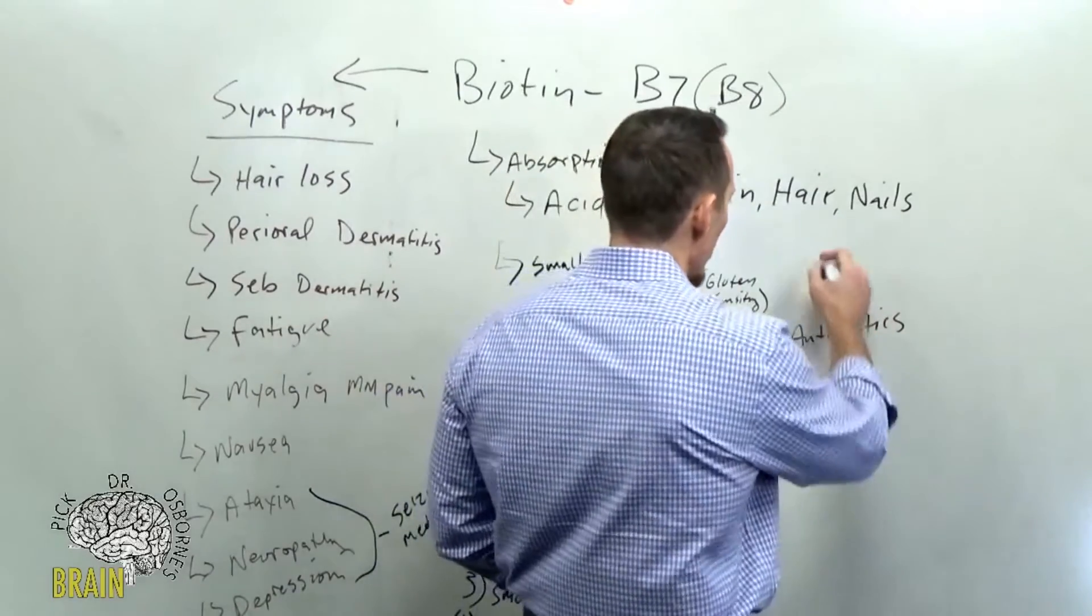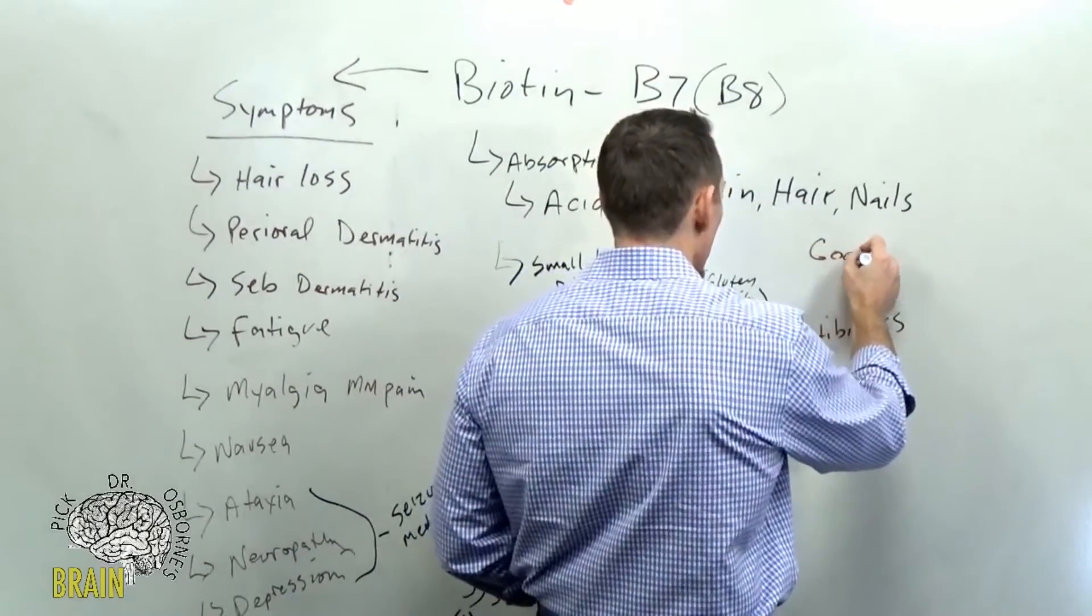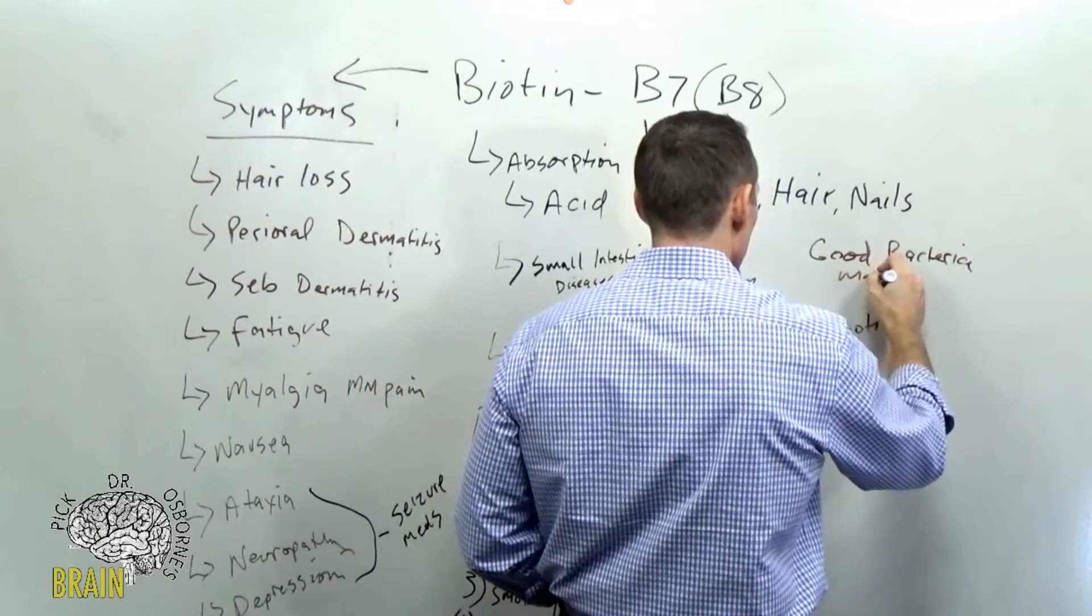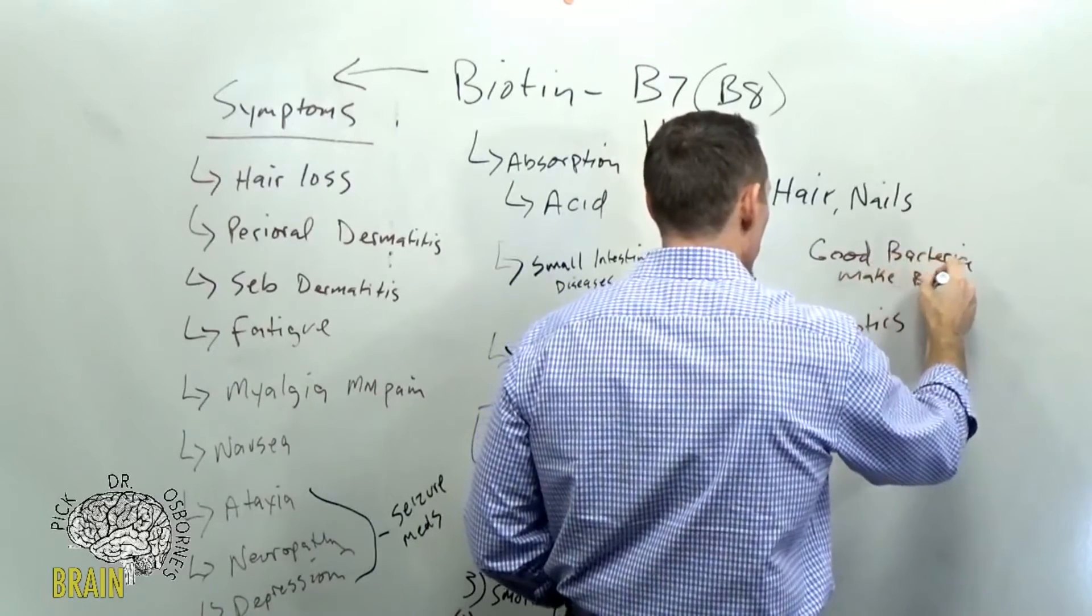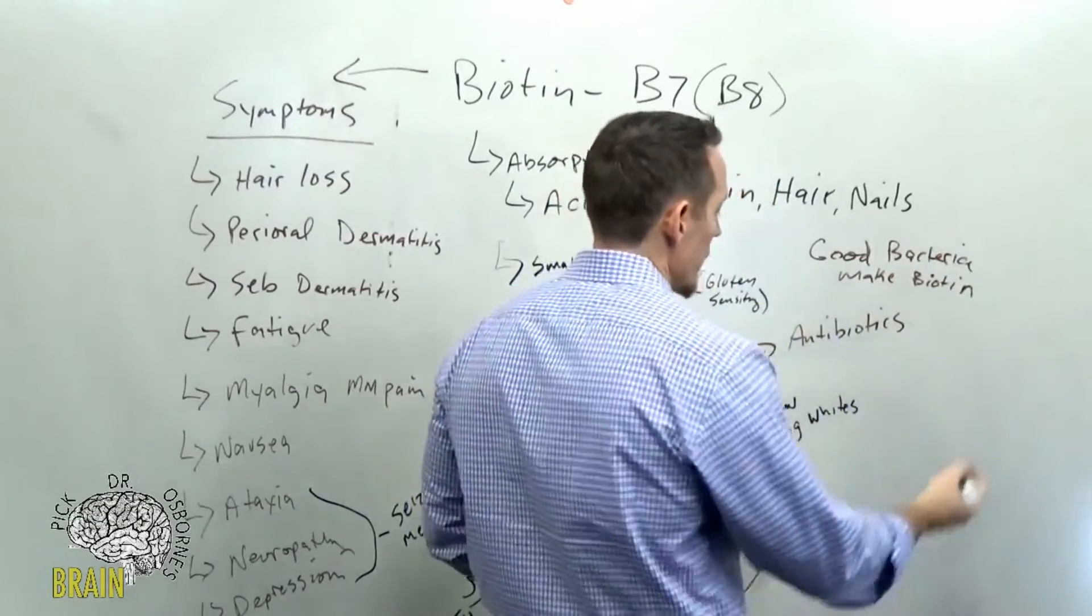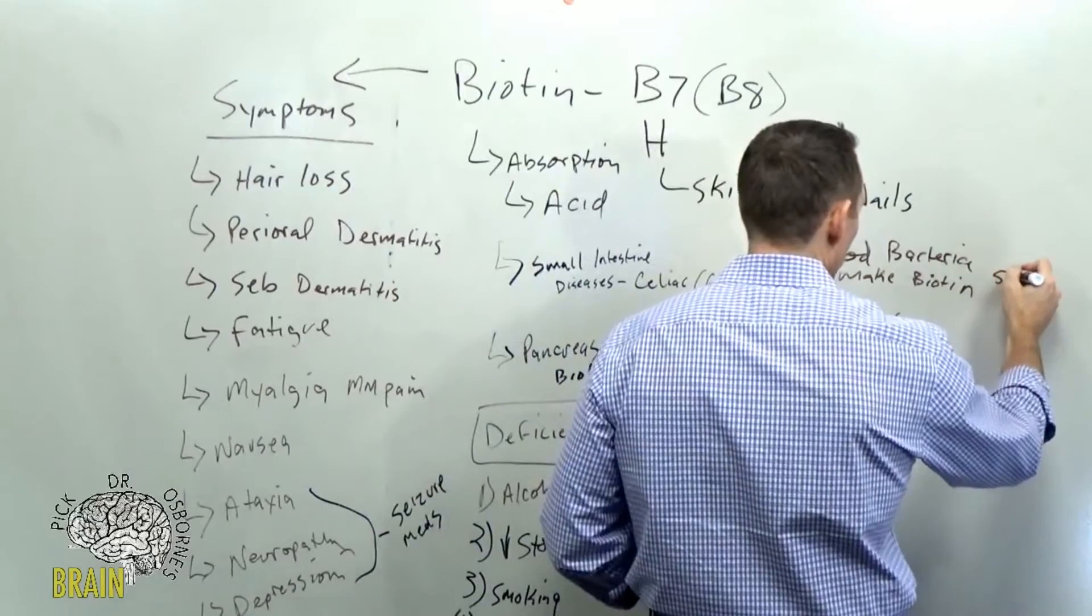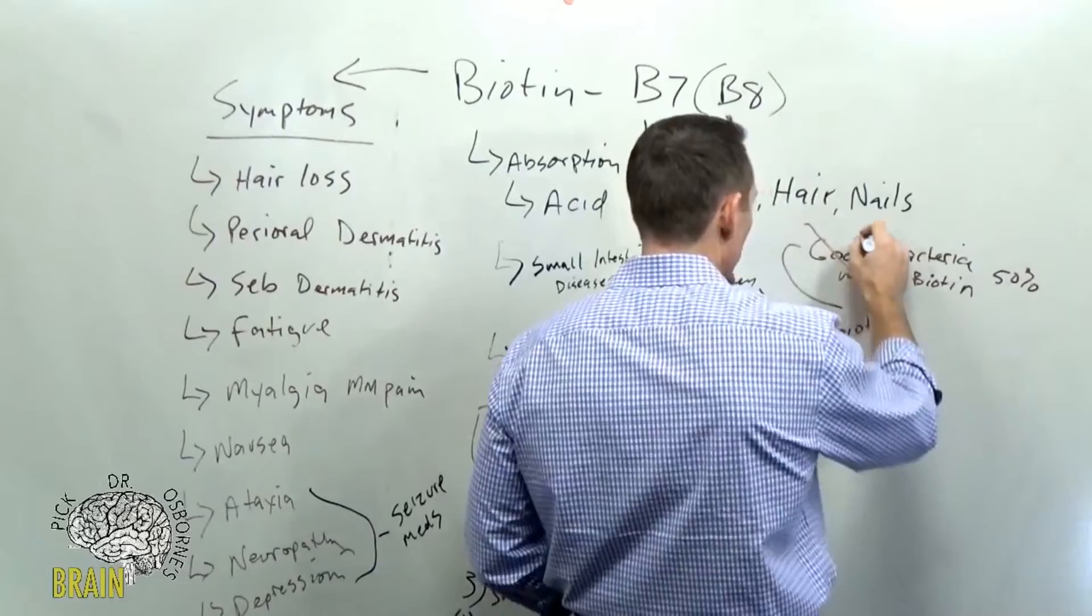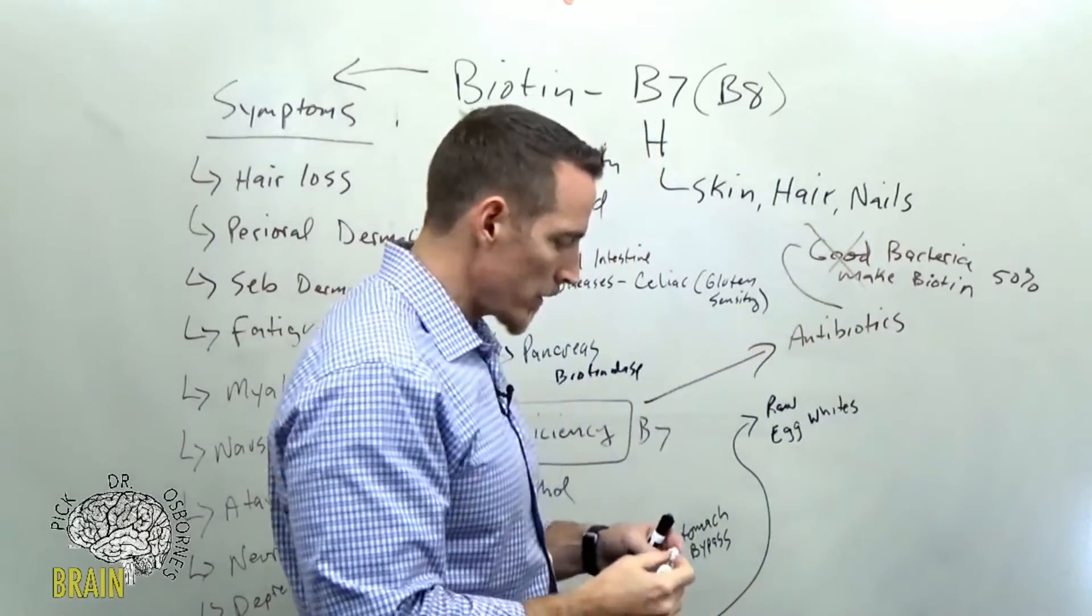And so remember good bacteria make biotin. And that biotin can be absorbed by your GI tract. And so that's a good thing, about 50% of our daily need. And so what do antibiotics do? Antibiotics wipe out good bacteria.